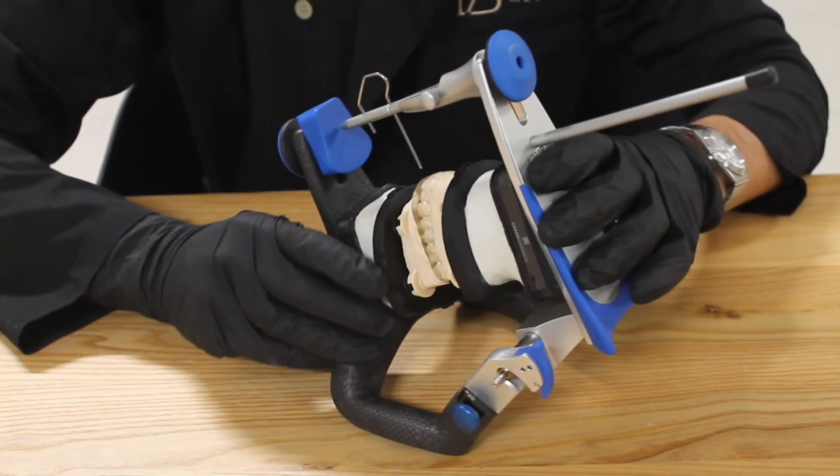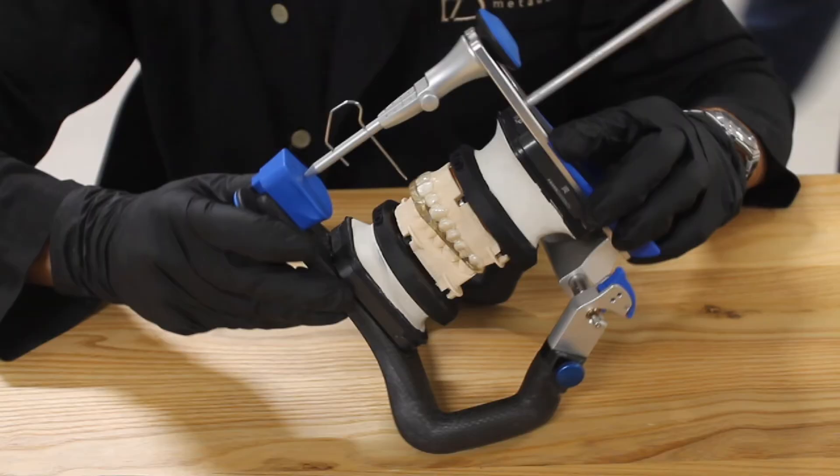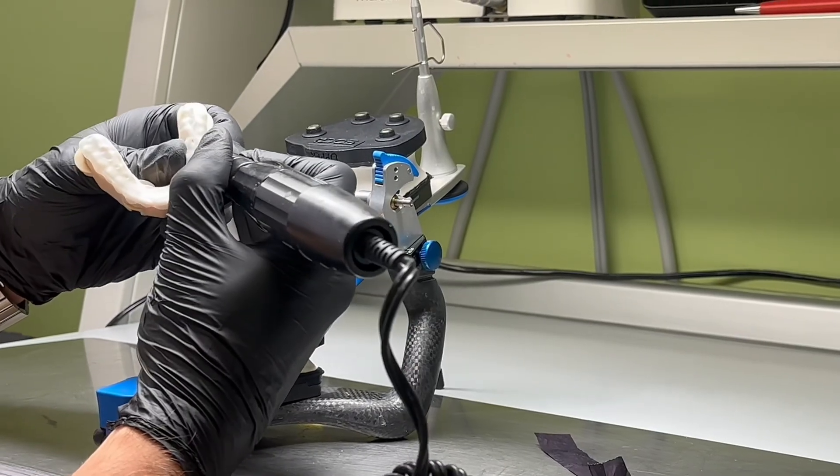Once the models are positioned in the articulator, you can proceed with a classic traditional occlusal check and finalize your restoration.